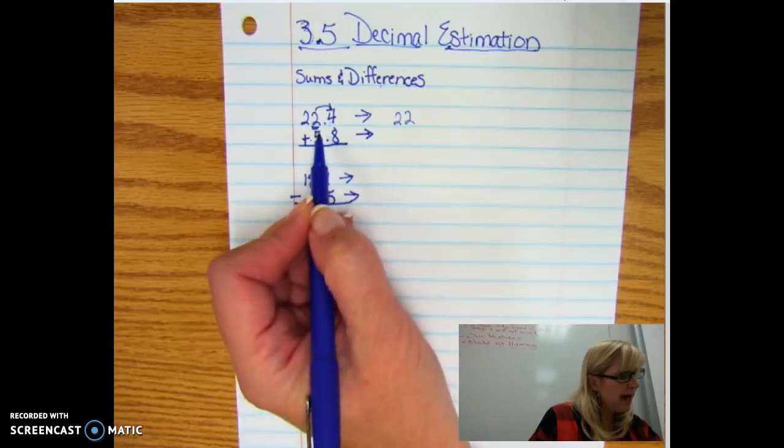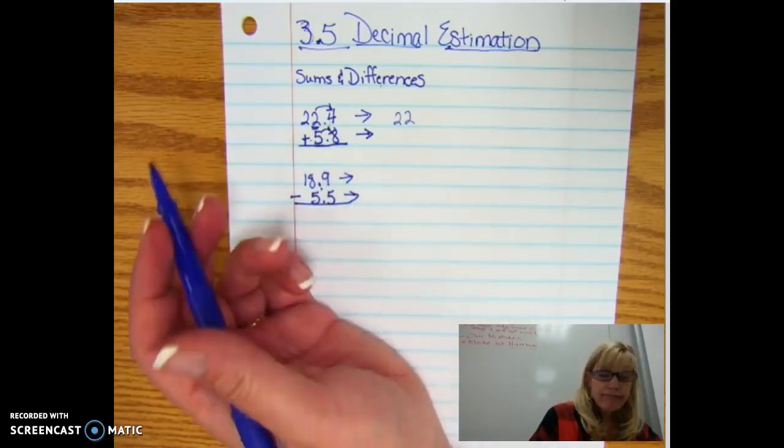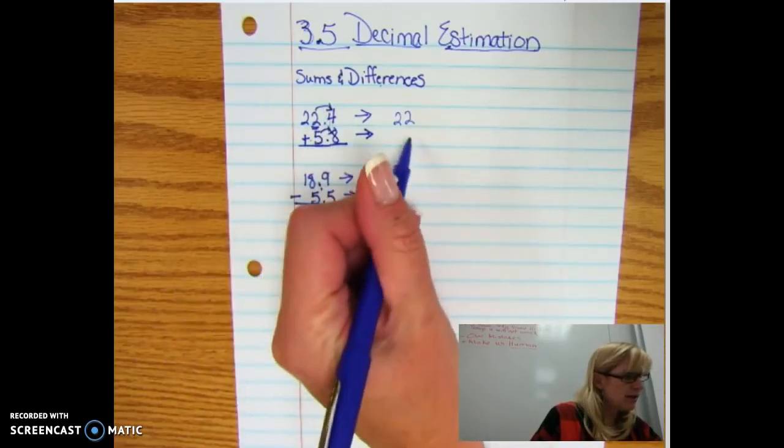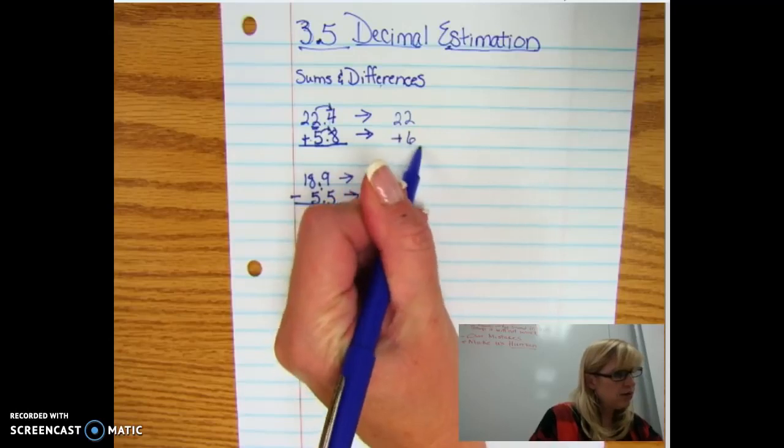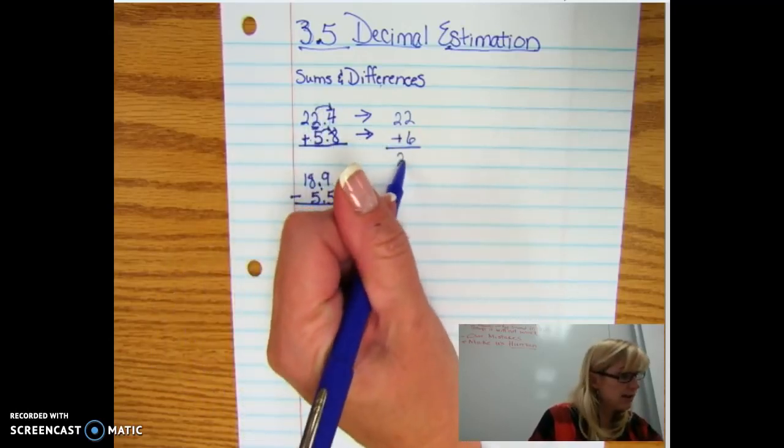If we round the 5, we're going to look to the right and see that it's an 8, well that's bigger than 5, so I know that that's going to go to a 6. 22 plus 26, easy peasy lemon squeezy, you have got a 28.